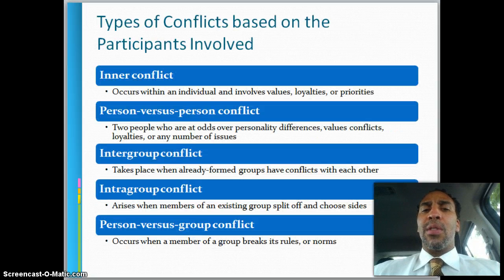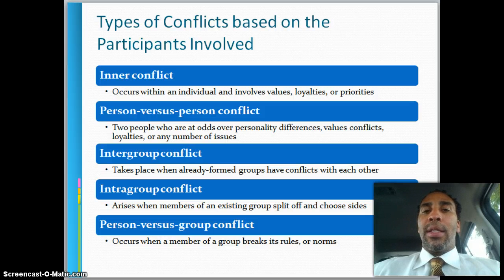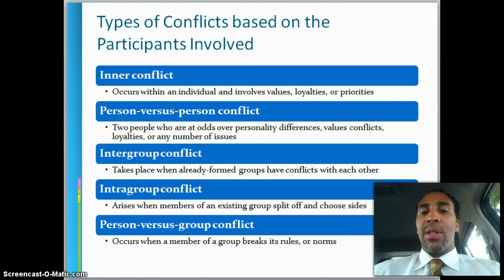Types of conflict based on participants involved: inner conflict occurs within an individual and involves values, loyalties, or priorities — like that little white angel and little red devil on your shoulders. For example, one side says don't steal paper from work, and the other says go ahead, it's no big deal. Then there's person versus person conflict — two people at odds over personality differences, values, loyalties, and any number of issues — when two people go head to head, that's person versus person conflict.